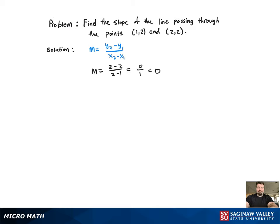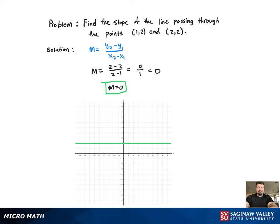Plugging it in, we get m equals 0, and that's the slope. The graph will be provided underneath. Since the slope is 0, that means it's going to be a horizontal line.